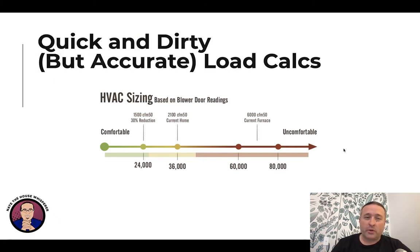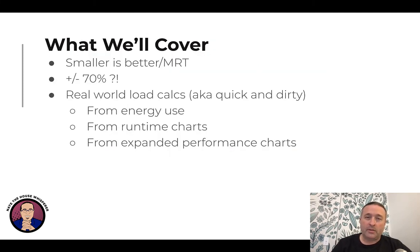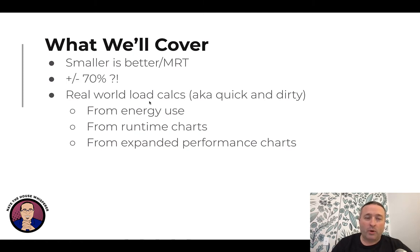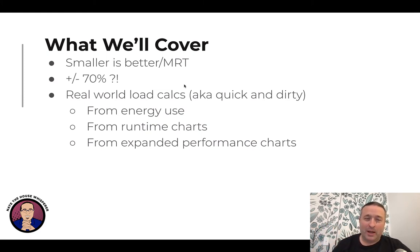This is what I originally called quick and dirty but accurate load calcs. We're going to talk about how smaller is better when it comes to HVAC because of mean radiant temperature — over half of human comfort is based on surface temperatures around us. We'll talk about the plus or minus 70% brouhaha. And then we'll go over real-world load calcs: you can do a calculation, or look at actual data from how a system is running, coming at it from energy use, runtime charts, and expanded performance charts.